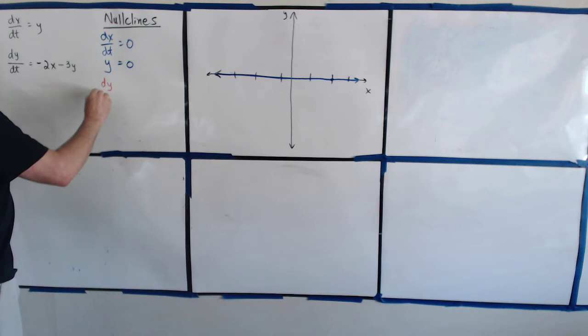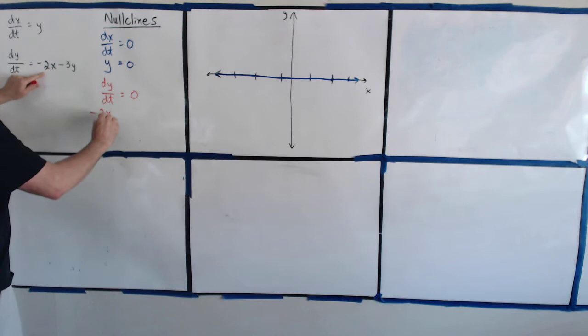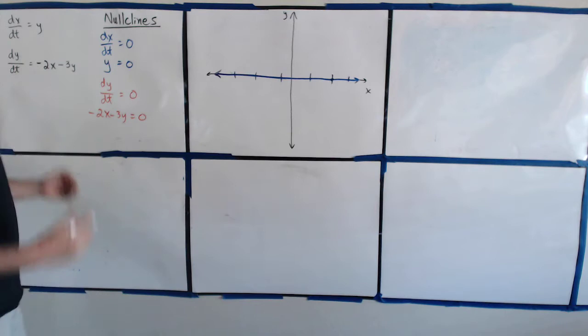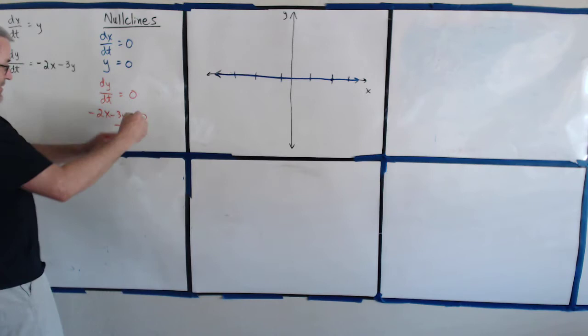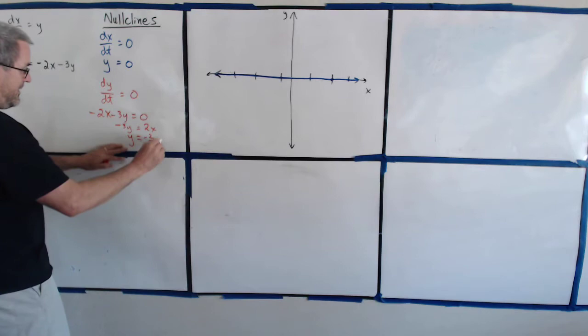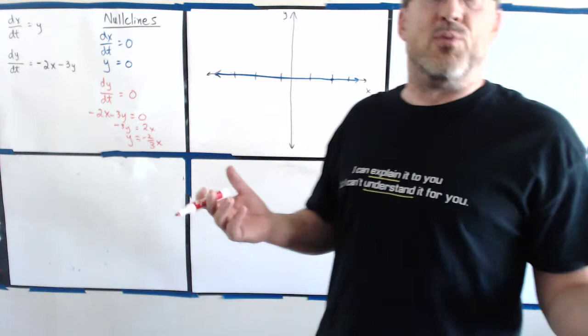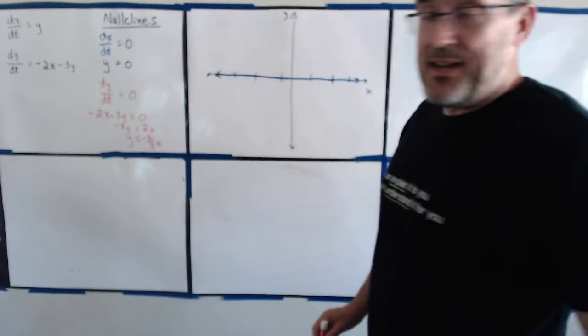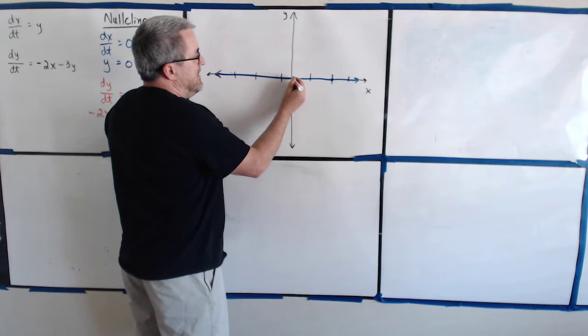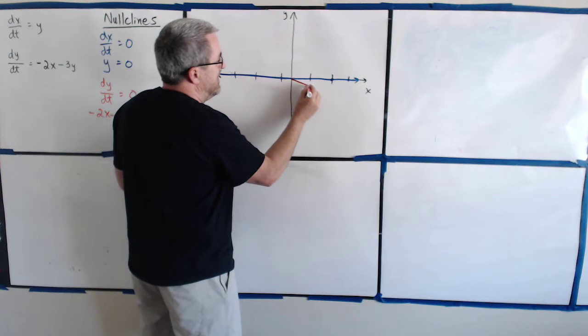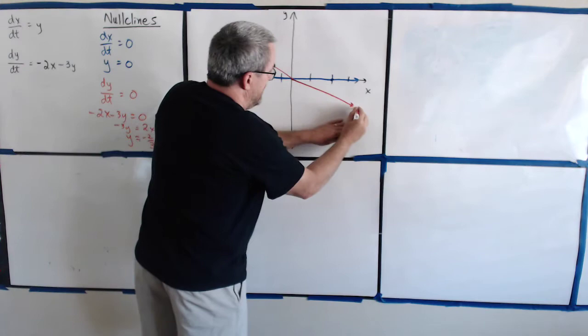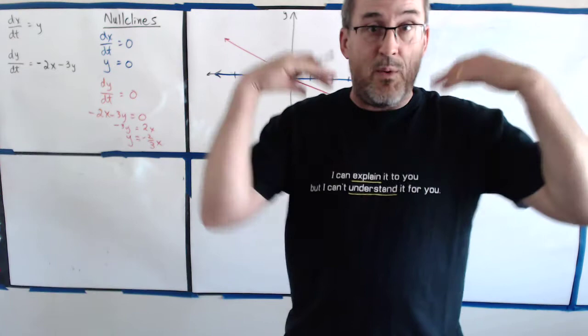We can also get a nullcline from dy/dt being zero. dy/dt is negative 2x minus 3y. Negative 2x minus 3y equals zero when — let's do some algebra — negative 3y equals 2x, divide by negative 3. Another nullcline, a place where the rate of change is zero, is along the line y equals negative two-thirds x. That would be a line with a negative slope. This is the line y equals negative two-thirds x.